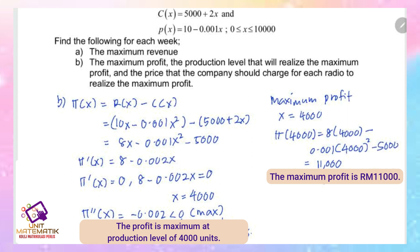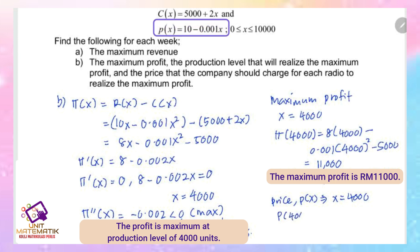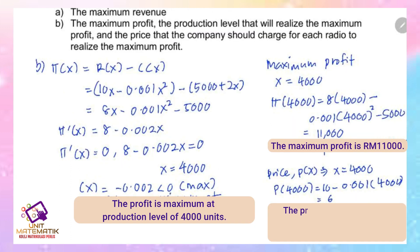Don't forget to find the price for part (b). The price is P(x). Substituting x = 4000: P(4000) = 10 - 0.001 × 4000 = 6. The price that the company should charge for each radio is RM6.